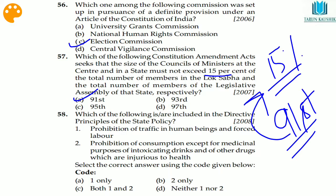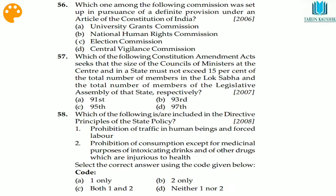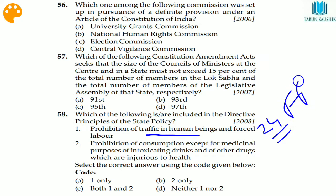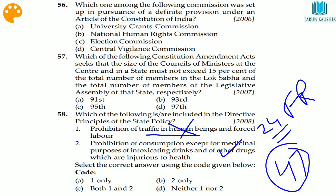Question 58: which of the following are included in the Directive Principles of State Policy? Prohibition of trafficking in human beings and forced labor is NOT a DPSP — it is a fundamental right under Article 23/24. The prohibition of intoxicating drinks and drugs injurious to health except for medical purposes IS a DPSP under Article 47. The second statement is correct — option B.